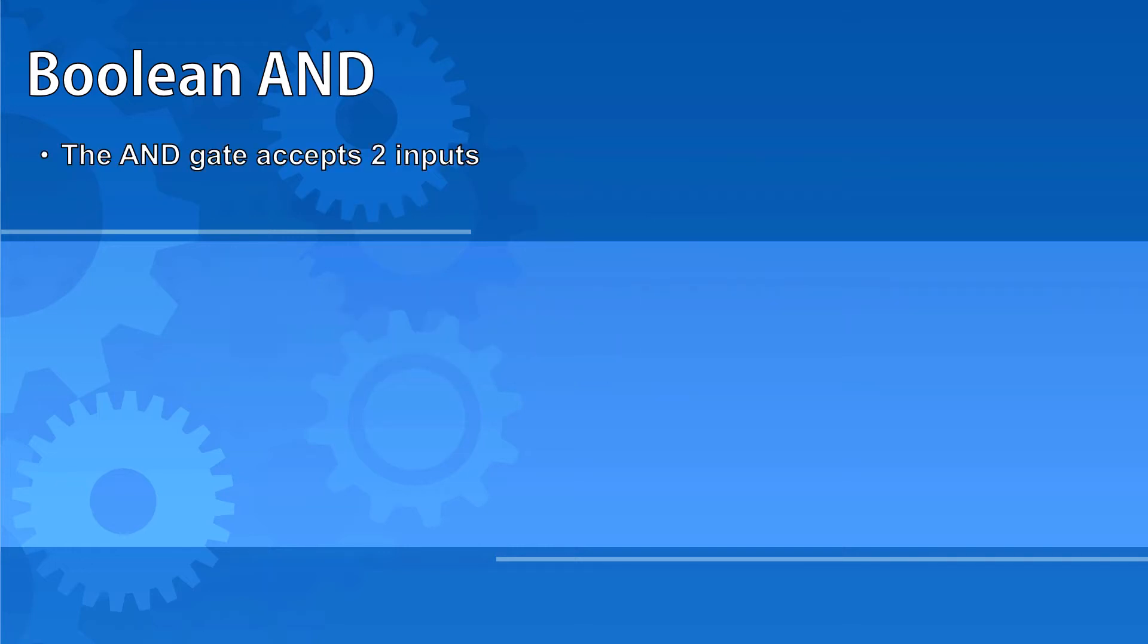The Boolean AND gate accepts two inputs. The output is 1 if both inputs are 1, and it's 0 in all other cases. The AND logic gate looks like a D. It's important to draw it with a very straight back so it doesn't get confused with the next gate we're going to look at.